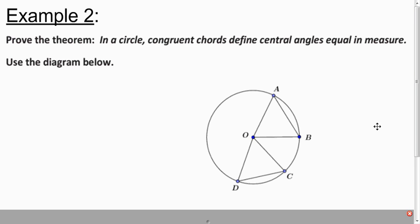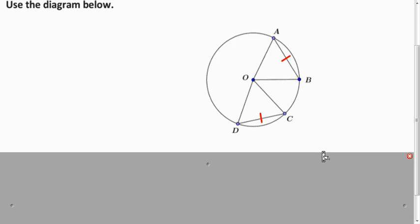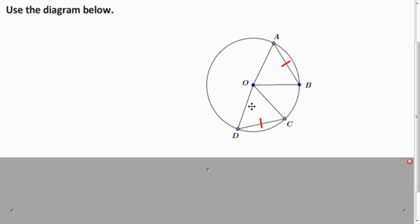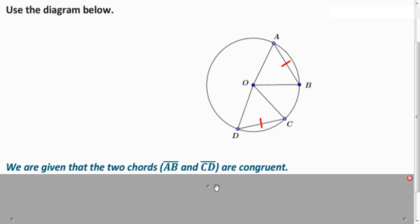We're also going to prove this theorem. And we're going to prove this slightly different. We're not going to use a two column. I'm just going to prove it using a little paragraph. So they give us congruent chords. So they give us AB is congruent to DC. And we want to show that the central angles AOB and COD are congruent. So I think we want to show that these triangles are congruent like we did previously to get the corresponding parts congruent.